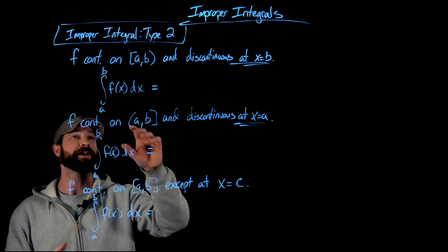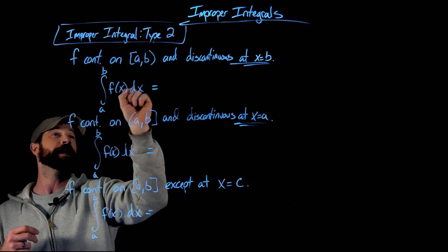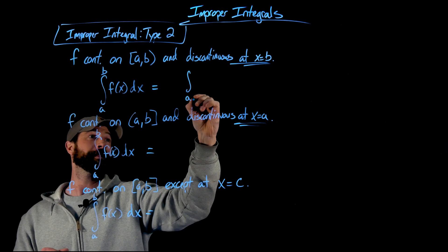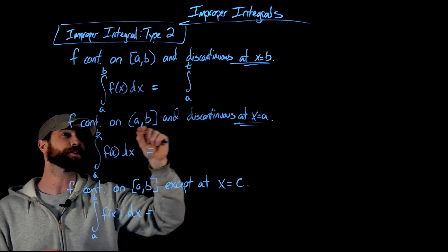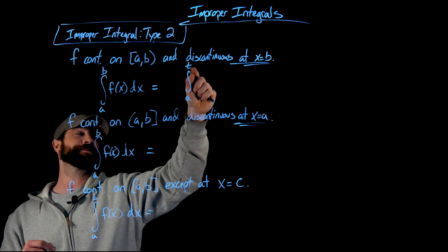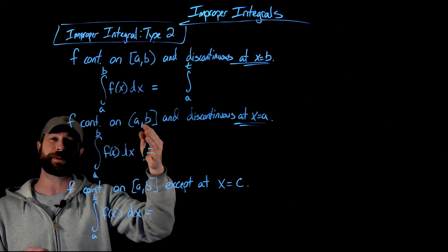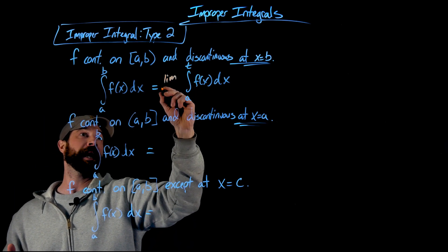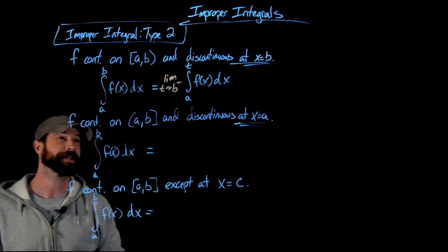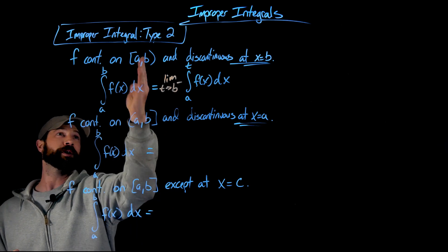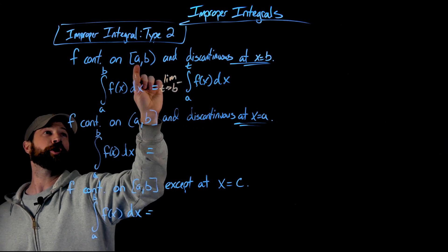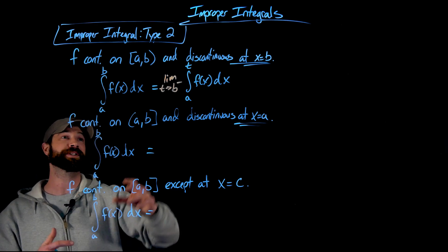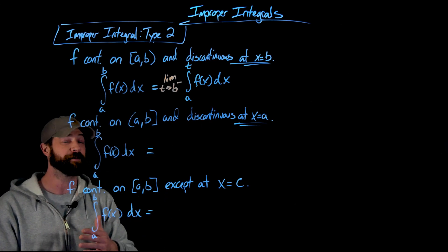Here's how we deal with it. We have this integral from a to b — simply numbers — but b is the issue; it's discontinuous at b. So what we're going to do is define the definite integral from a to t, where t values approach b from the left. We're looking for the limit as t approaches b from the left. These values come at b from within the interval, getting very close to b. The idea of the limit means we never actually plug in b, since that's a discontinuous point, but all the values right before b are fine.